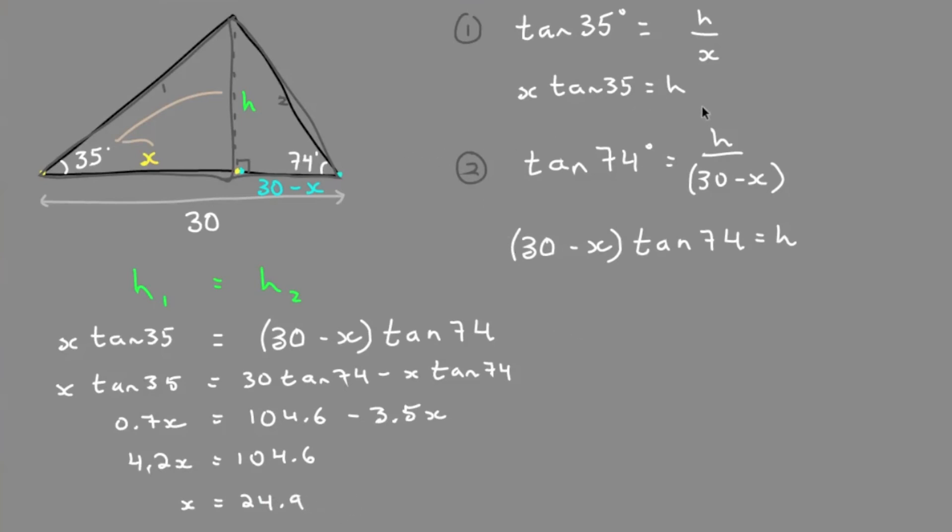This question is asking for the height, h. So now we can sub x in to solve for h. We have h equals x times the tan of 35, which is 24.9 times the tan of 35 equals our height.